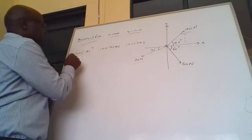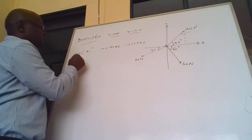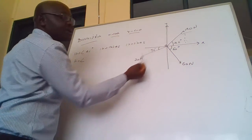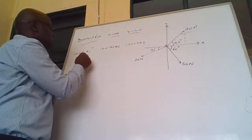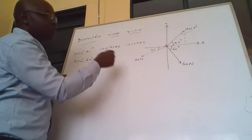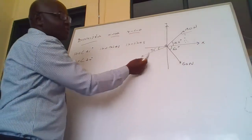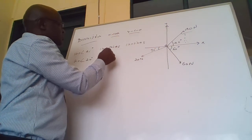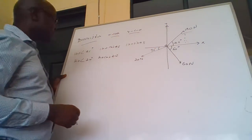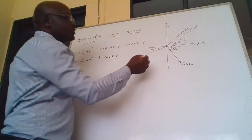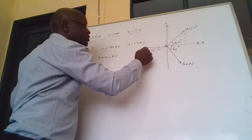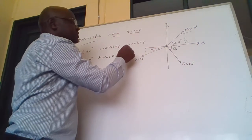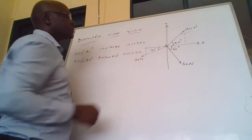For this second force — from here up to is 180, plus 30 gives 210. So the X component of this force will be 20 cos 210, and the Y component will be 20 sin 210.